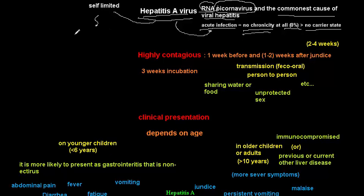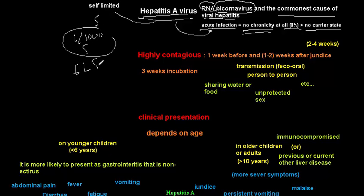In about 1 per 1,000 cases we have fulminant liver disease and death. Most cases that have fulminant liver failure are adults and elderly people, so younger people will be less susceptible to fulminant liver disease.